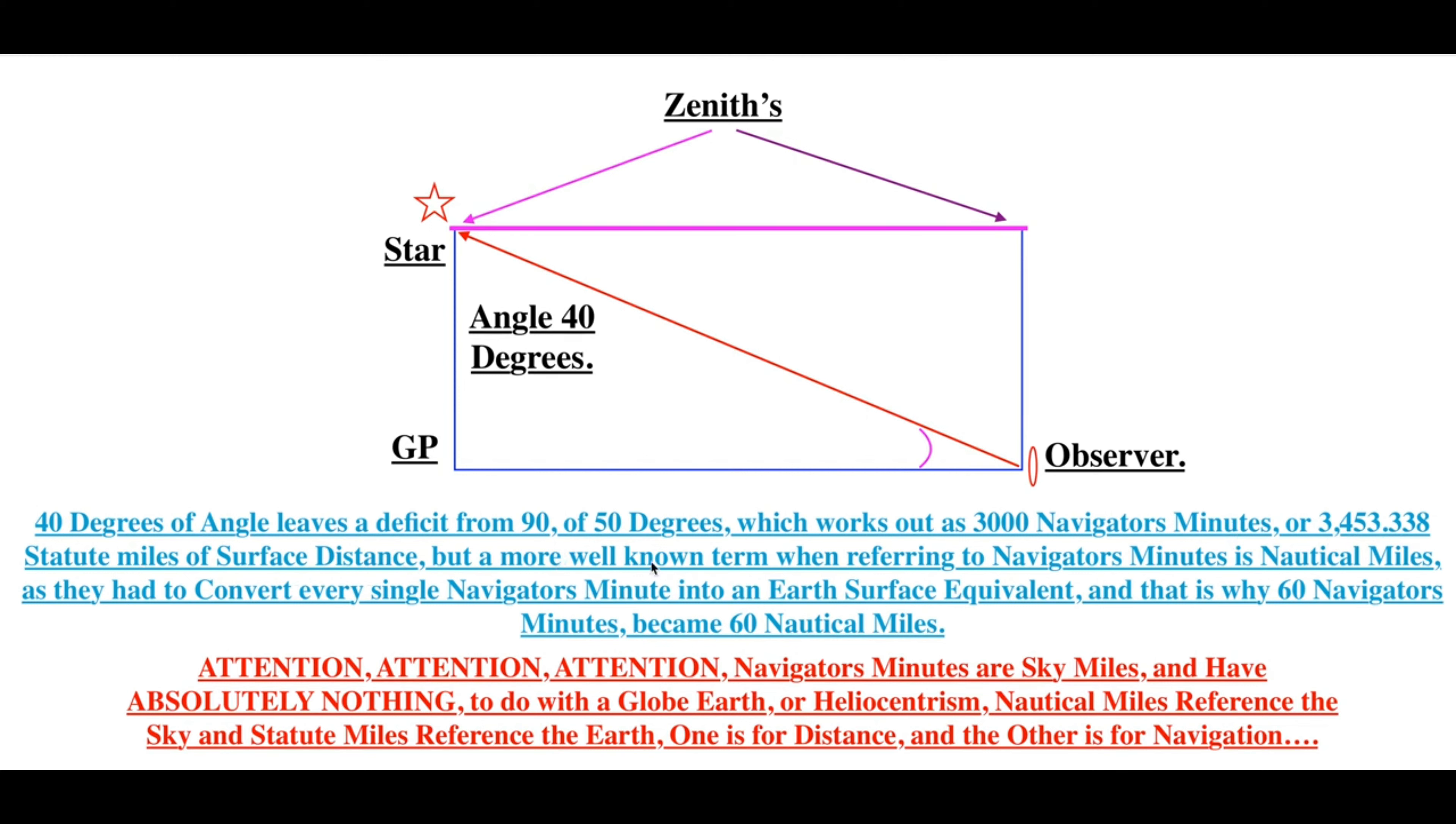But a more well-known term when referring to navigators minutes is nautical miles, as they had to convert every single navigator's minute into an earth surface equivalent. And that is why 60 navigators minutes became 60 nautical miles.